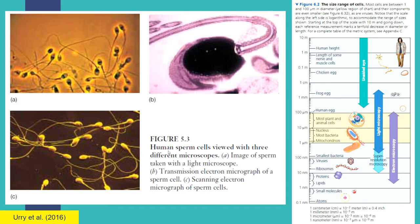We can see human sperm cells viewed under three different types of microscopes. First, sperm cells viewed under a light microscope. Letter B shows how sperm cells look under a transmission electron microscope. Letter C shows the surface of sperm cells viewed under a scanning electron microscope.